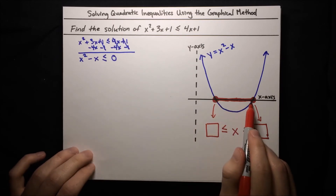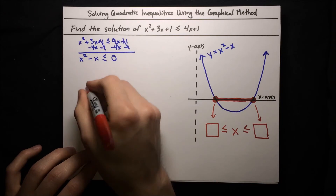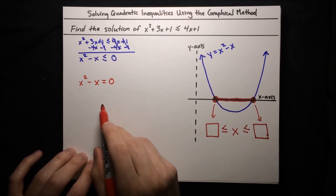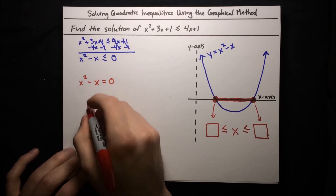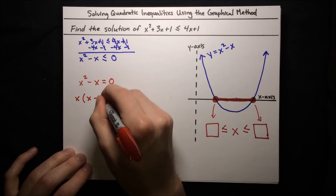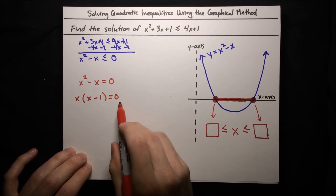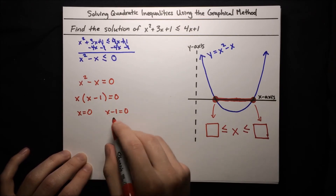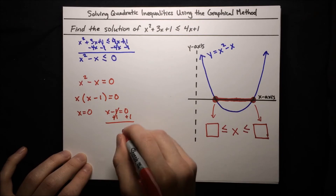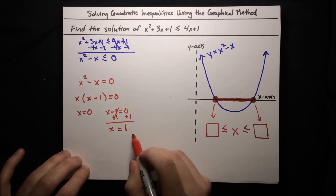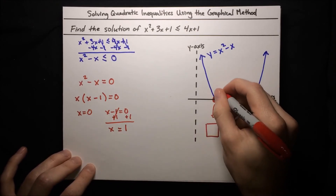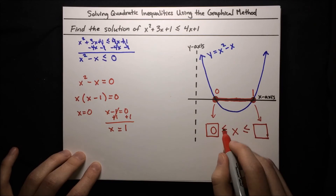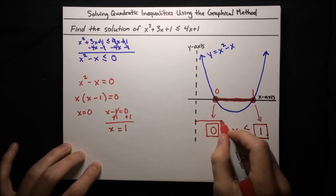Now we just need to figure out what the roots are. We set x squared minus x equal to 0 and solve. We can factor out an x: x times x minus 1 equals 0. Setting each factor equal to 0 gives x equals 0 and x minus 1 equals 0, so x equals 1. So 0 and 1 are our roots — 0 is the left root and 1 is the right root. Plugging into our template: x is greater than or equal to 0 and less than or equal to 1. That's our solution.